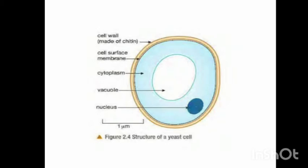Now we are going to look at the structure of fungi. Fungi are of two types: some are unicellular and some are multicellular. An example of a single-celled fungus is yeast. A yeast cell has a cell wall, cell membrane, cytoplasm, nucleus, and mitochondria. All fungal cells have cell walls, cell membrane, cytoplasm, and mitochondria, and they vary in size from single-celled to large multicellular forms. An example of a multicellular fungus is the mushroom.